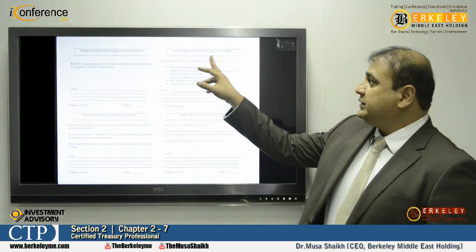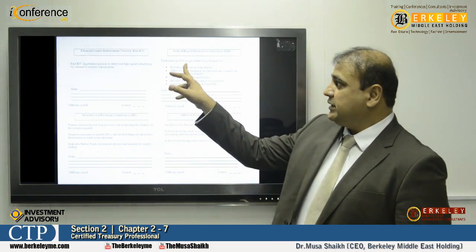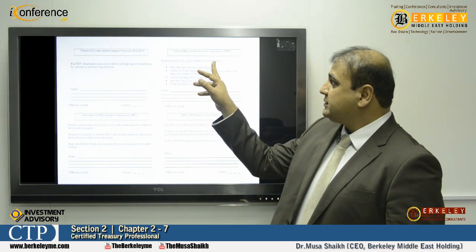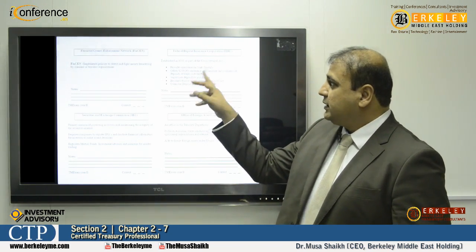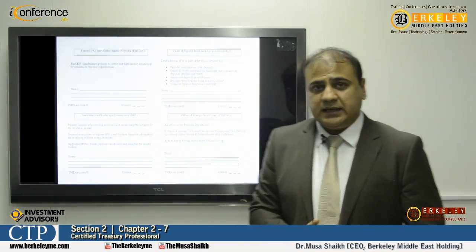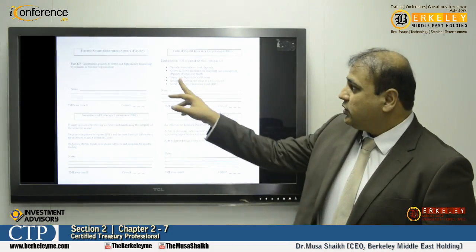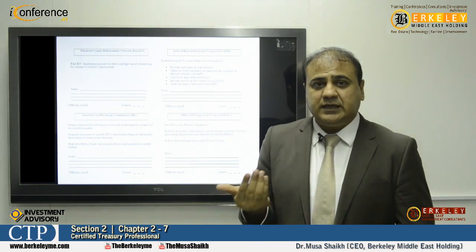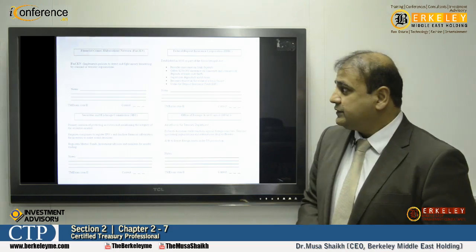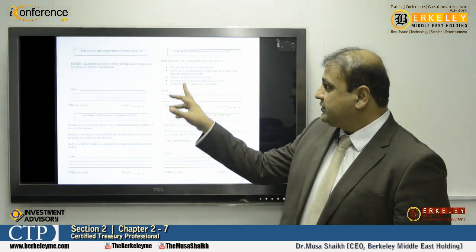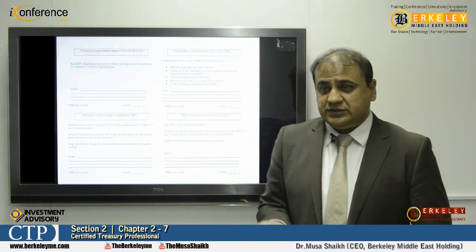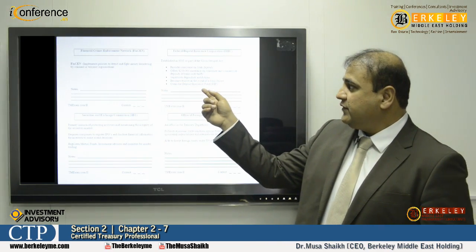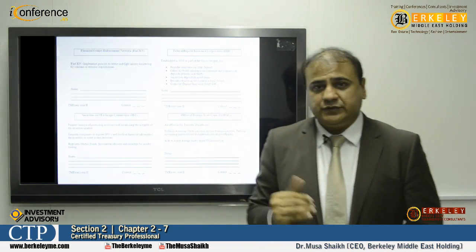The Federal Deposit Insurance Corporation, established in 1933 as part of the Glass-Steagall Act, provides insurance on bank deposits. This is a salient feature — offering $250,000 insurance for consumer and commercial deposits at banks. They supervise depository institutions, become trustee in the event of bank failures, and own the deposit insurance funds.